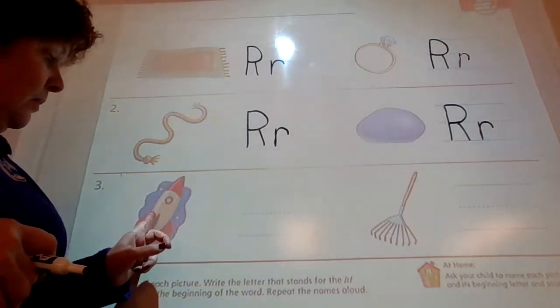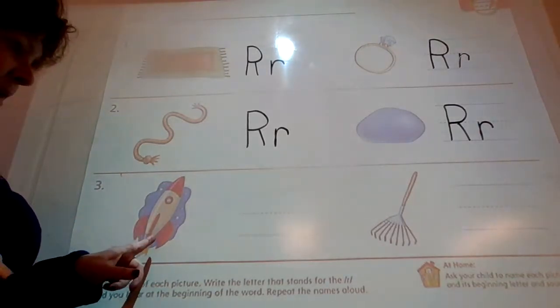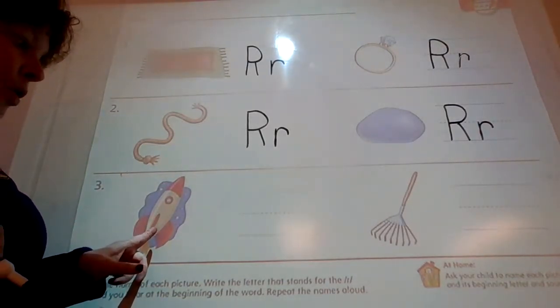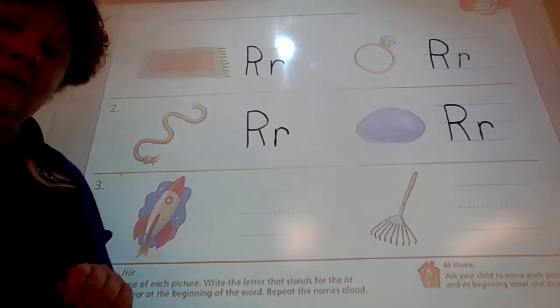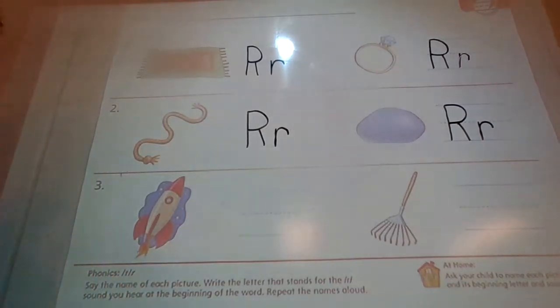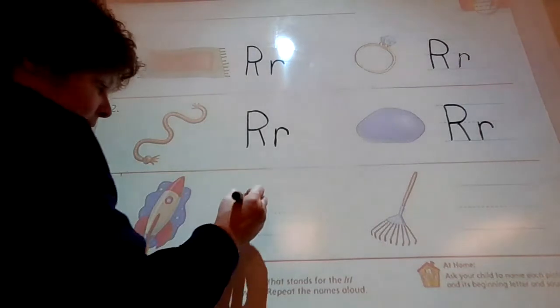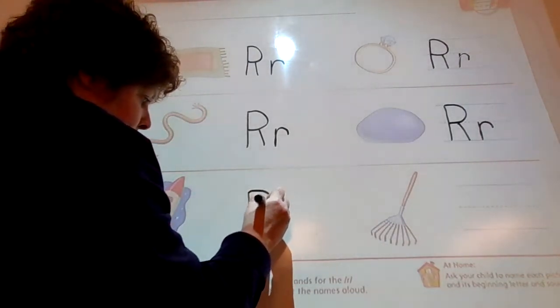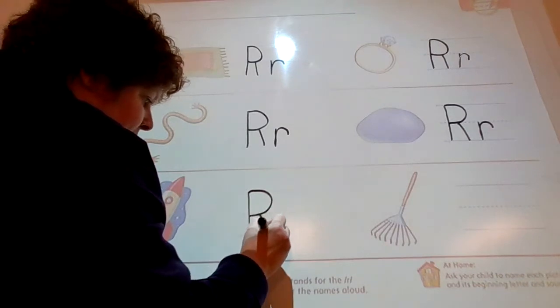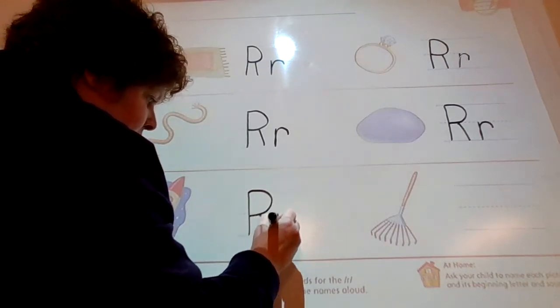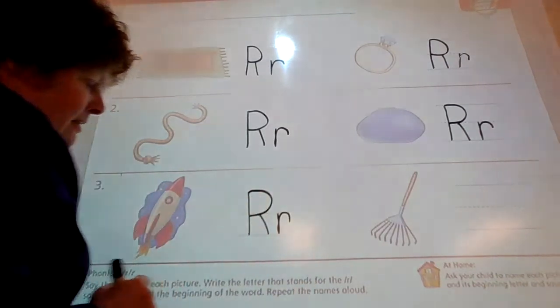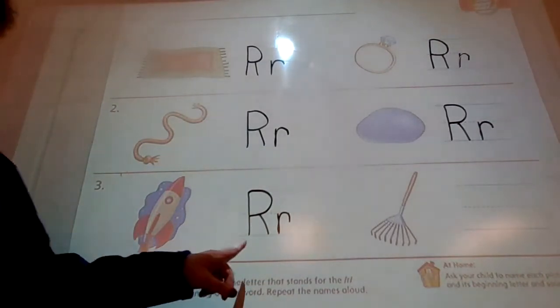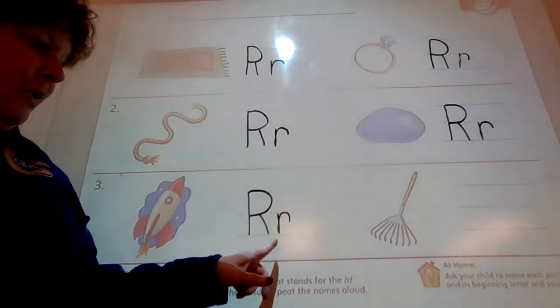All right, what do we have on number three? What is that? A rocket. Does rocket start with rrrr? Yes, it does. And I bet it has that kind of sound when it takes off. Capital R, lowercase r.